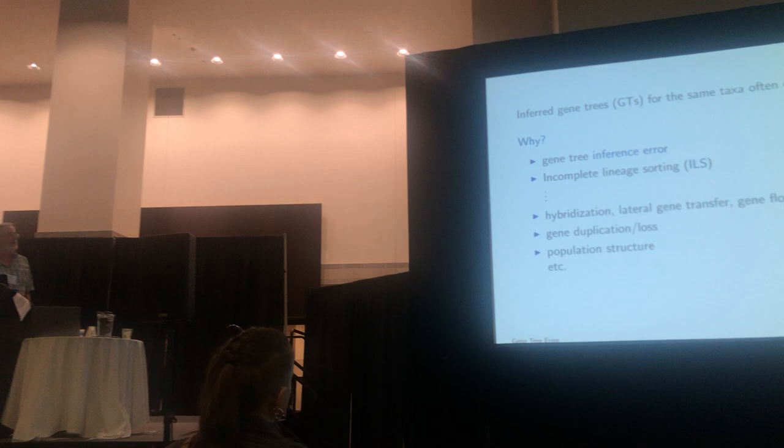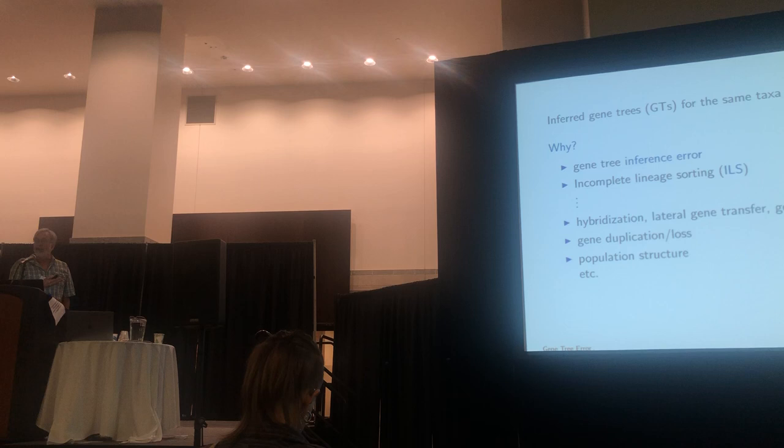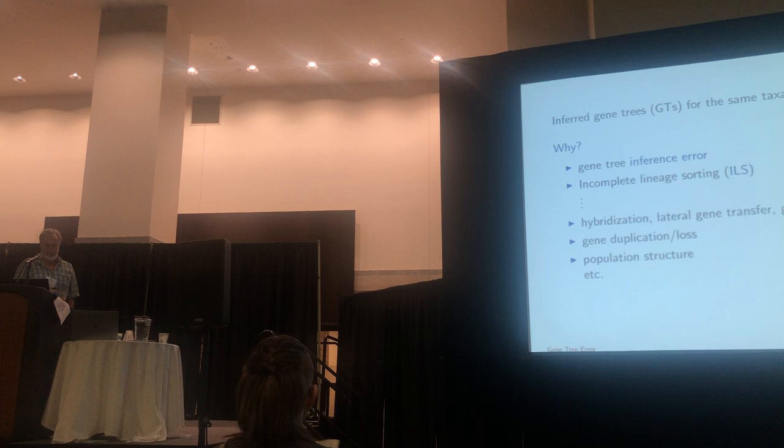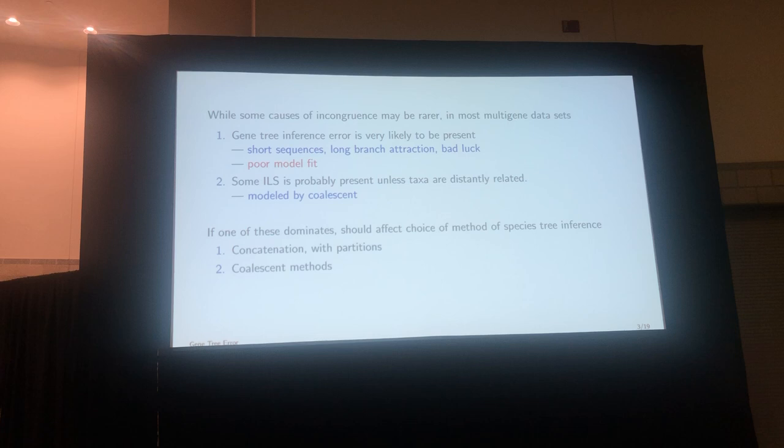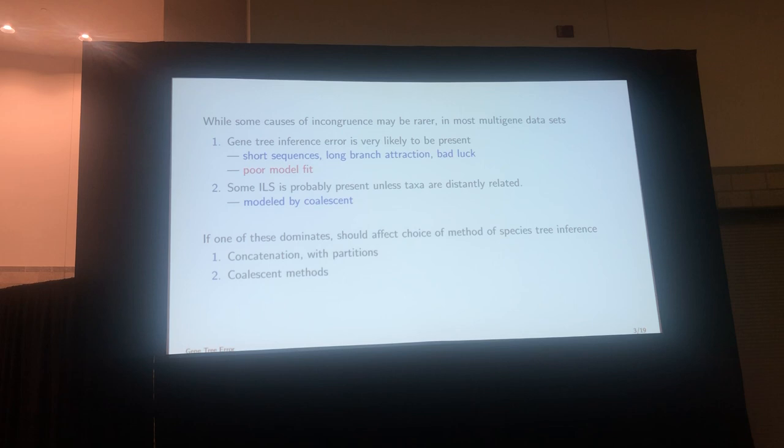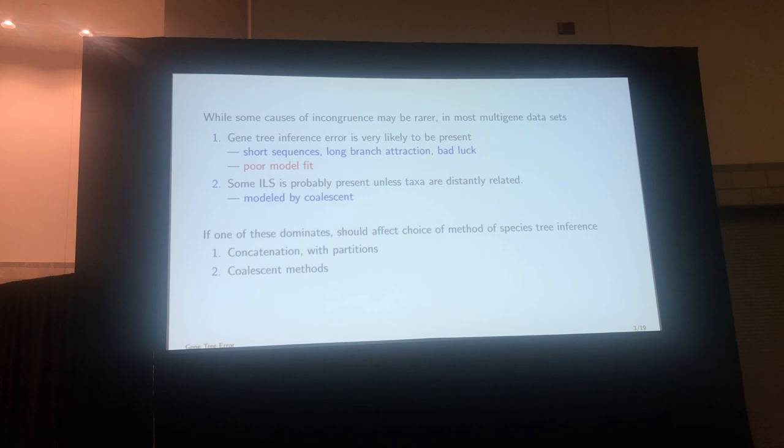There are some of these that we can model, some that can be addressed, and some that cannot be addressed by modeling, because they're essentially a statement that we don't think our models are good enough. While some causes might be rarer, in most multi-gene data sets you're going to see some gene tree inference error. You have finite length sequences, long branch attractions, and just statistical bad luck — sometimes you get the wrong tree.